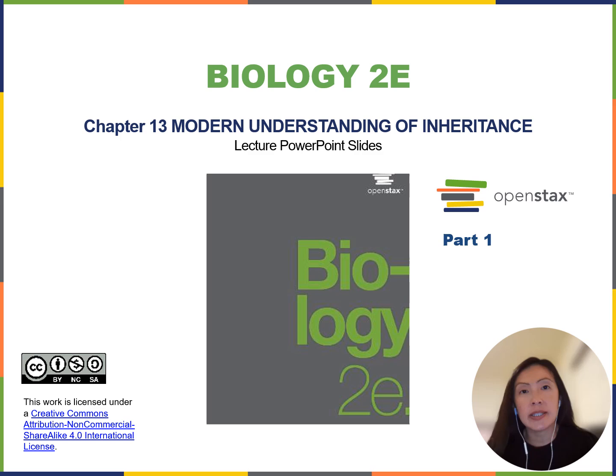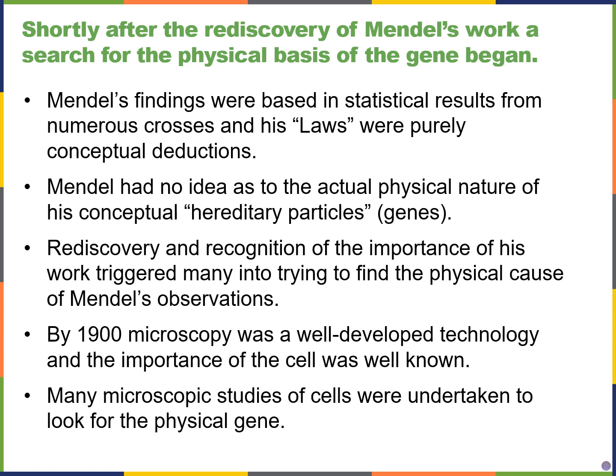Welcome to Chapter 13. In this chapter, we're going to be looking at linked genes and abnormal chromosomes. As we learned in Chapter 12 as well, Chapter 13 describes that Mendel's findings were really based on purely conceptual deductions of the findings from his pea plants.